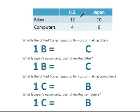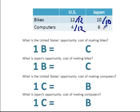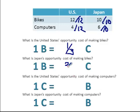The first thing we'd like to do is compare the opportunity cost of producing one bike for each nation. To do that I simply divide both products that each nation produces by the number of bikes they can produce. This will get us to the opportunity cost for that good. So we can see that the opportunity cost for the United States to produce one bike is one-third of a computer, and the opportunity cost for Japan to produce one bike is three-fifths of a computer.